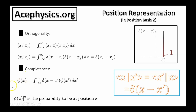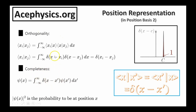Any function psi — or any function f of x, it doesn't have to be psi; we use psi for quantum mechanics — can be written as a linear combination of these basis functions, with the Dirac delta function as the basis functions. This is a complete and orthonormal basis.